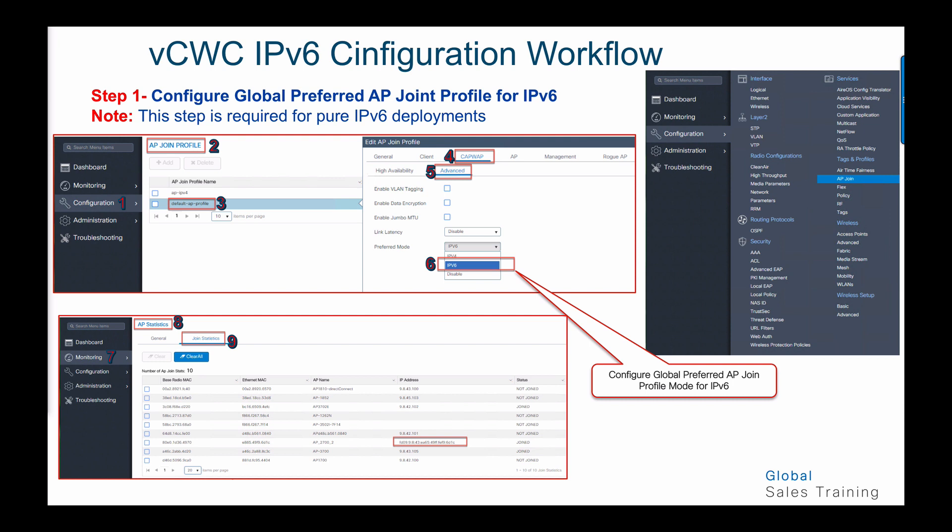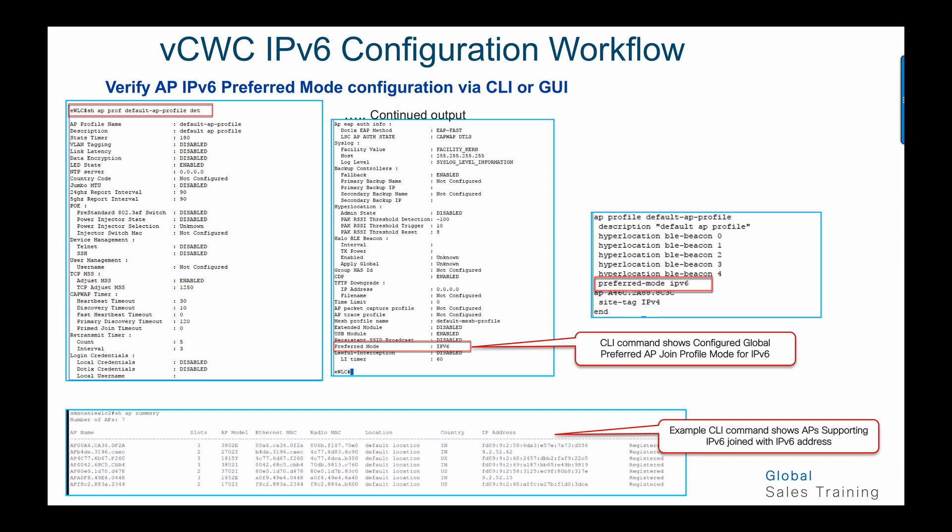If you go to monitoring step seven and look under AP statistics join statistics, you can see all the APs that joined the controller and whether each AP joined with IPv4 or IPv6. You can also verify from the CLI using commands such as 'show AP profile [name] detail' to see how APs are joining. The preferred mode field will indicate that the specific AP joined the controller in IPv6 mode.